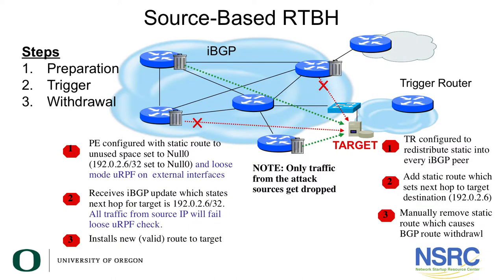This picture shows how source-based RTBH works, and it's very similar to the destination-based RTBH diagram with one specific distinction: the use of URPF. In the preparation step, the trigger router is configured exactly the same as in destination-based RTBH, but the difference comes in the provider edge configuration, where you also use loose-mode URPF on external interfaces. When a DDoS event occurs and you add the static route in the trigger router, all traffic from the source IP will fail loose URPF checks and get dropped. With source-based RTBH, only traffic from tracked sources is dropped, so some legitimate traffic will still reach the target victim.